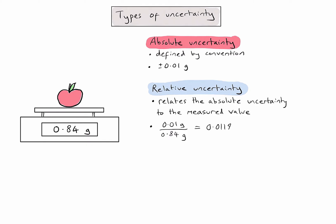To be consistent when dividing two experimental values, I need to look at the smallest number of significant figures in my calculation and apply that to the value I calculate. The top value in my calculation has just one significant figure, and the bottom value has two significant figures. So I need to take the smallest number of significant figures, which is 1, and apply that to my calculated answer.